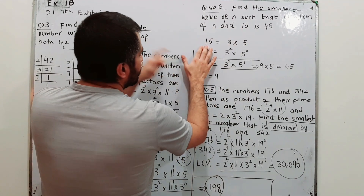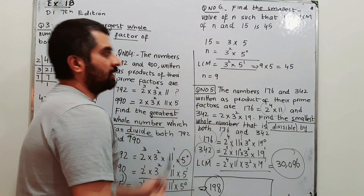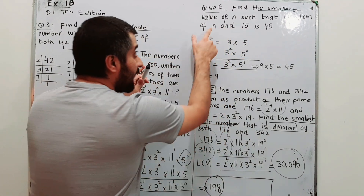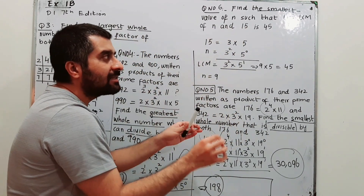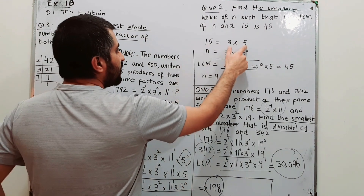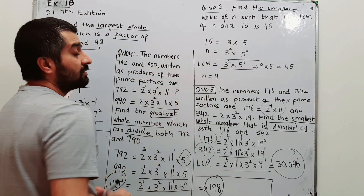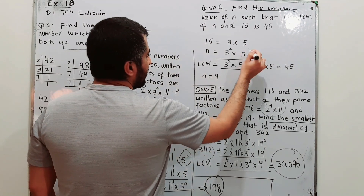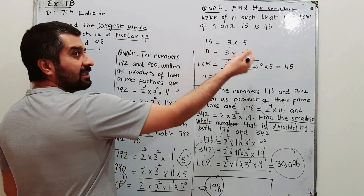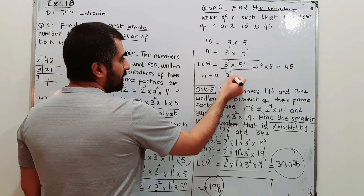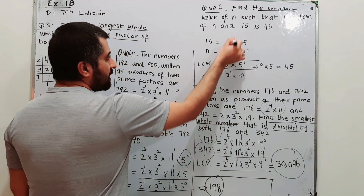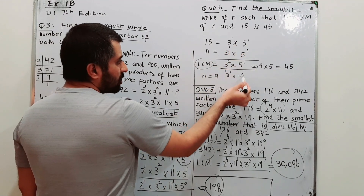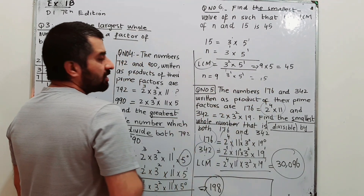First, write down the prime factors of 15: 3 × 5. We need to find n such that LCM(n, 15) = 45. If we try n = 15 (i.e., 3¹ × 5¹), then for LCM we take the highest powers: 3¹ and 5¹, giving LCM = 15. That is not 45, so this doesn't work.